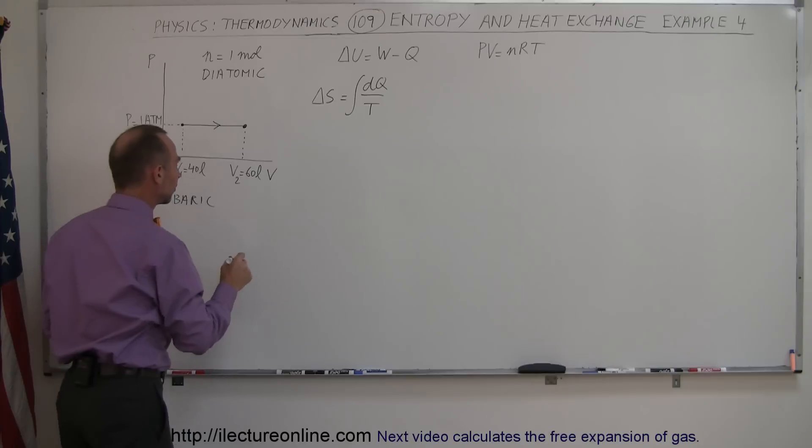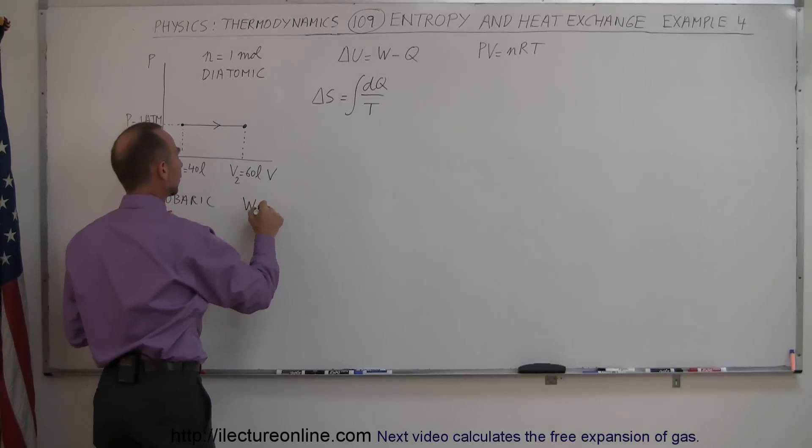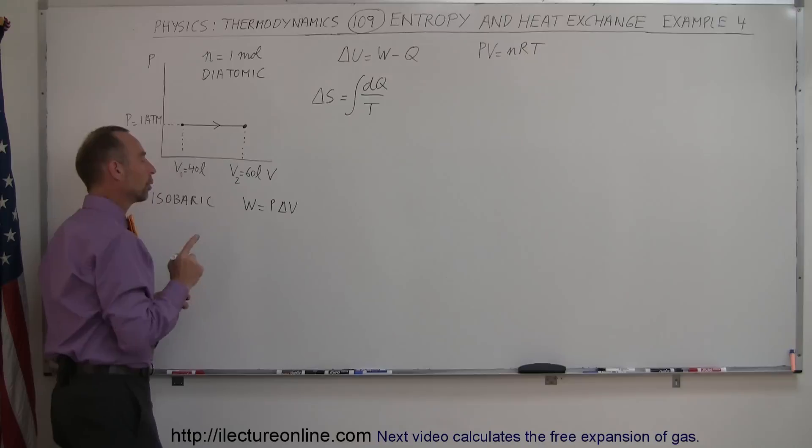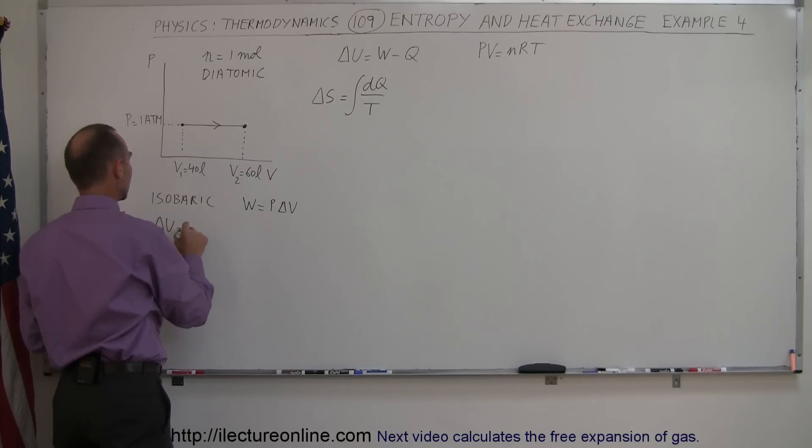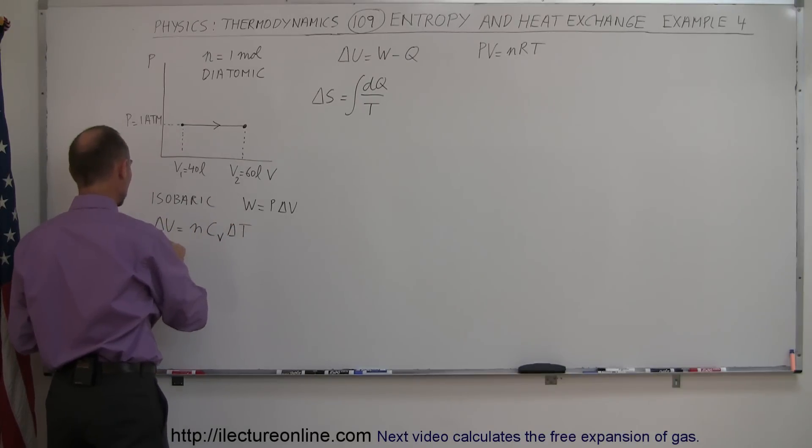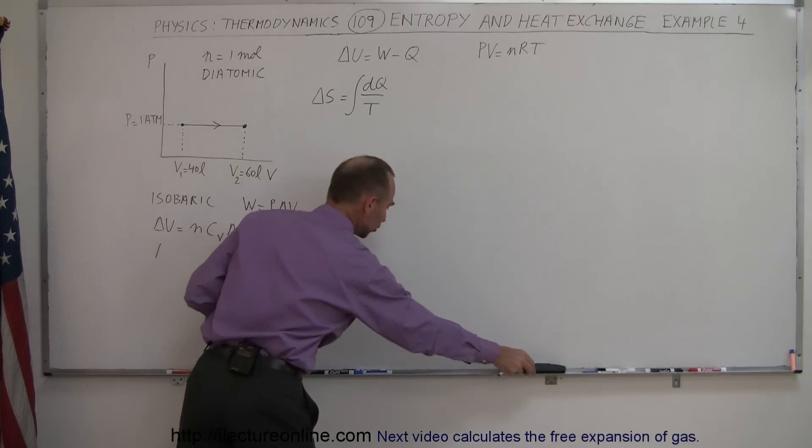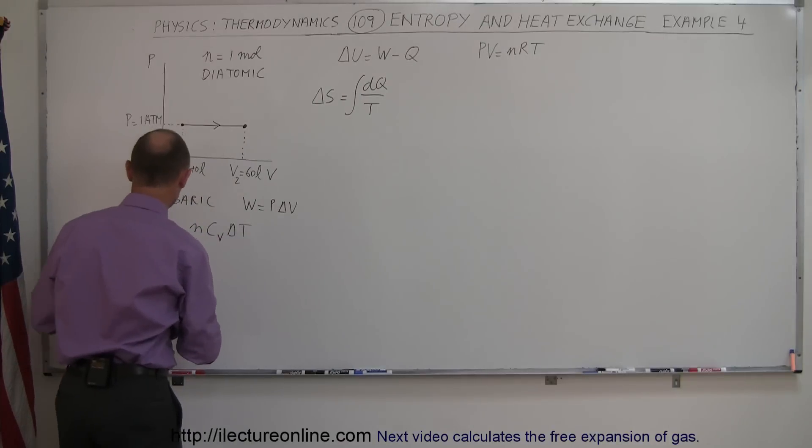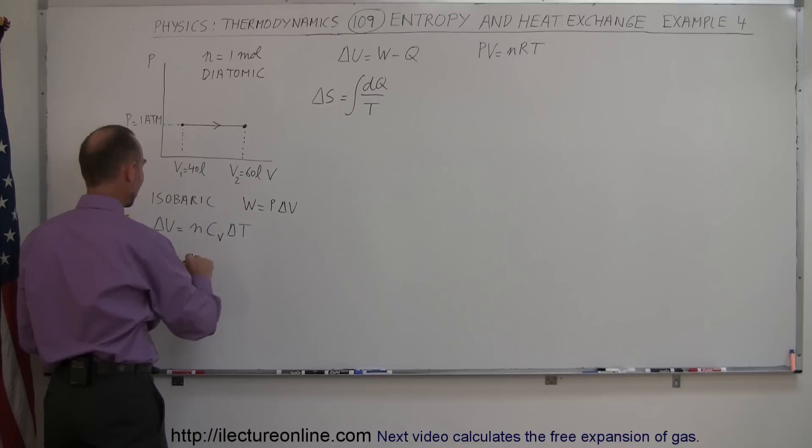In an isobaric process, we know that the work done is equal to the pressure times the change in the volume. We also know that the change in internal energy is equal to N C_V delta T, and we also know that the change in the heat or the heat exchange, Q, is equal to N C_P delta T.